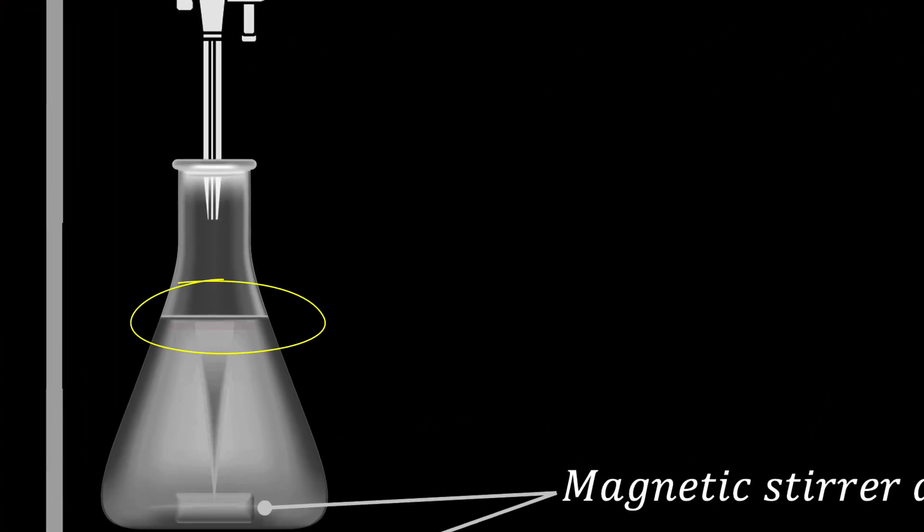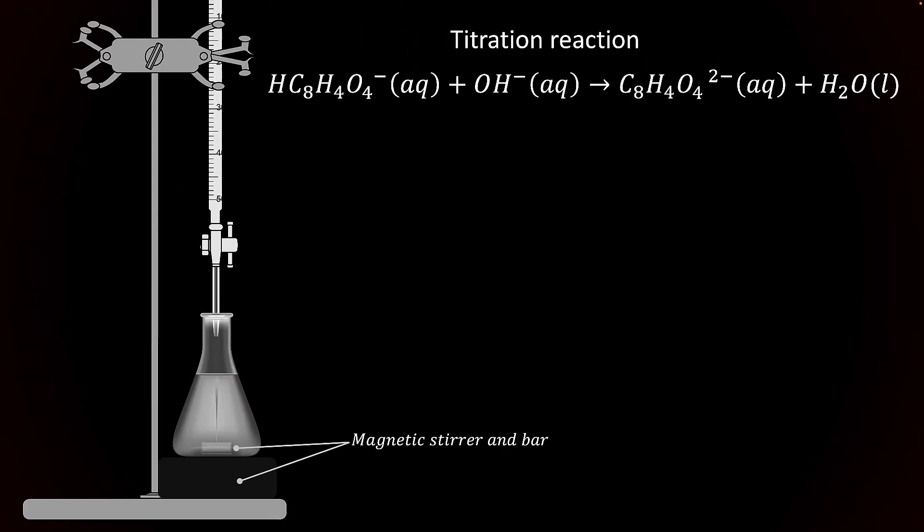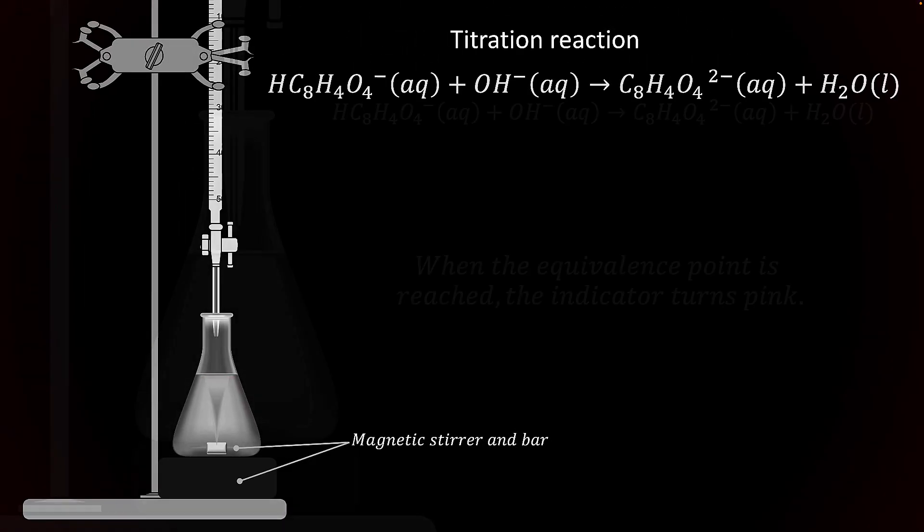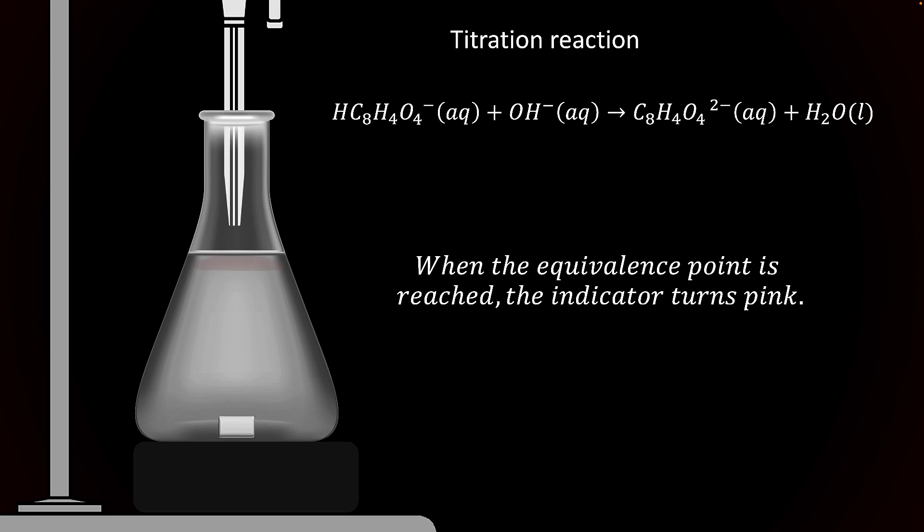You may notice that right at the top of the reaction mixture, the faint appearance of a pink color that quickly fades. At some point the pink color will persist for a longer period, and at this point you should slow down your titration to go drop by drop. The trick is to go slowly enough that one drop of hydroxide solution causes the entire solution to turn pink. At this point the equivalence point is reached and the titration is stopped.